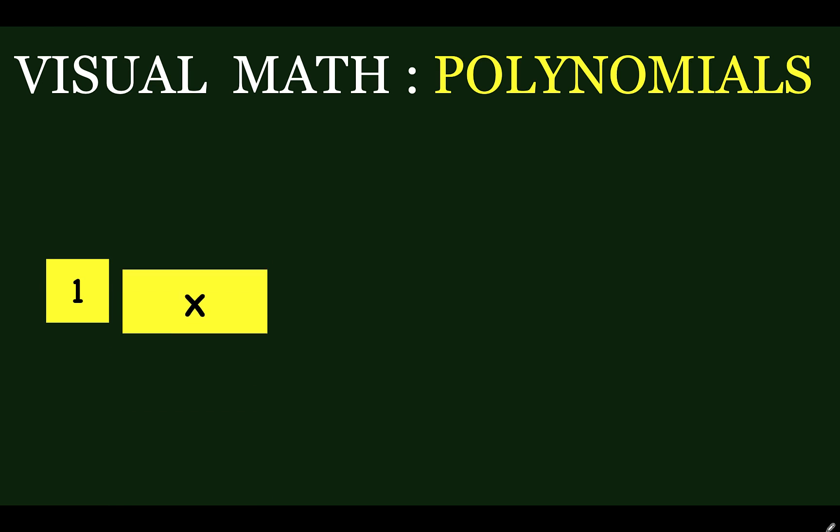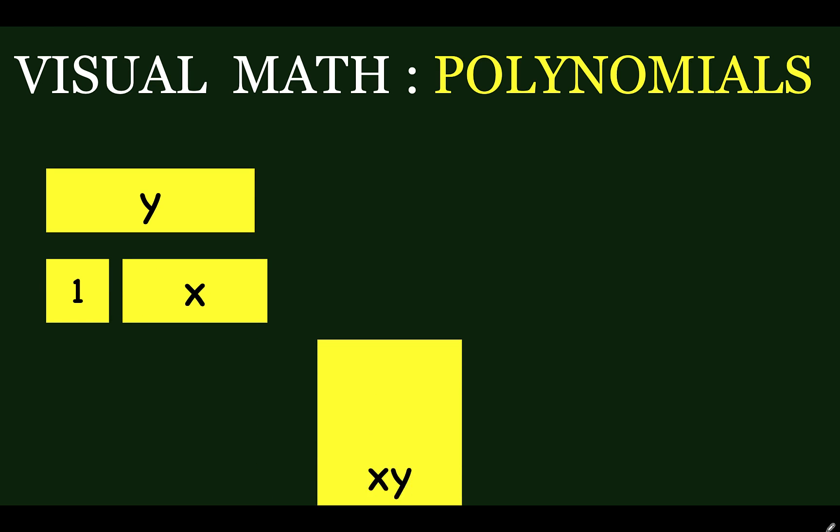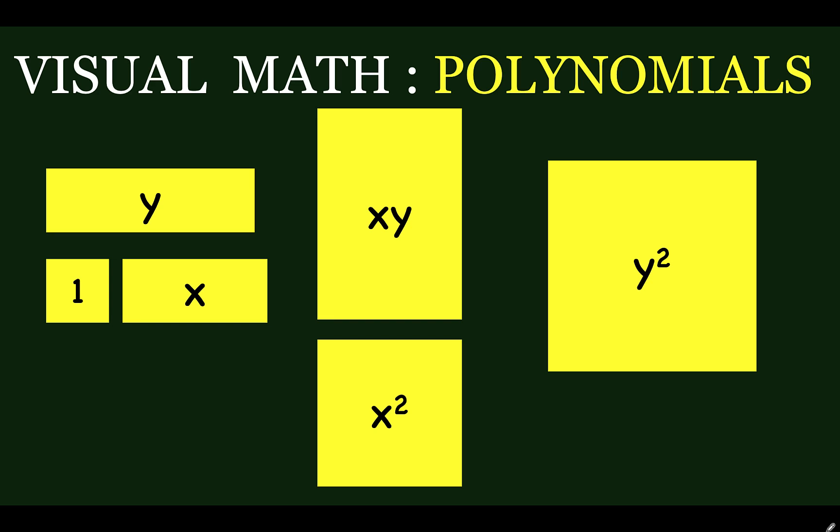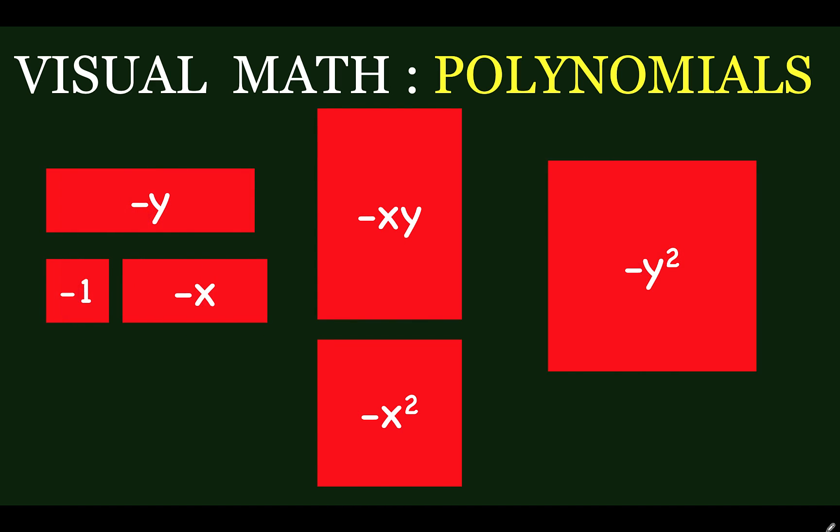This is Visual Math for simplifying polynomials. We use yellow for positive, and this is how we represent the constants and the variables. The same shapes, but color red, they are all negatives.